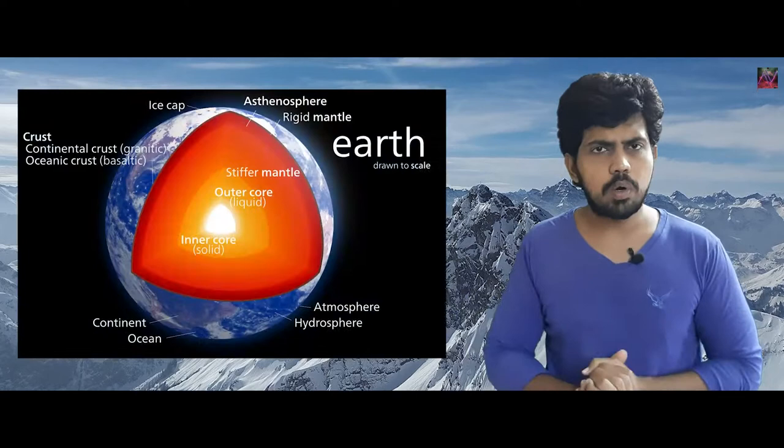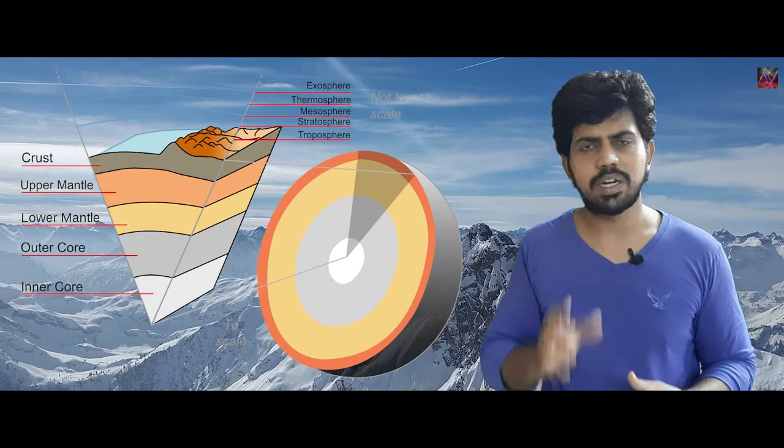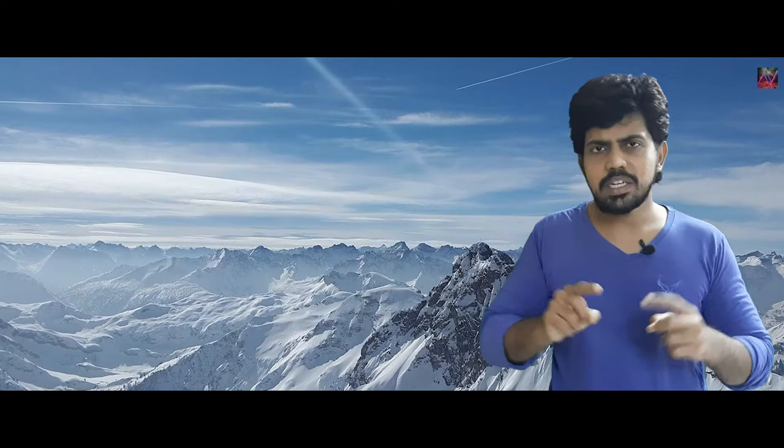Now let's see how tsunamis occur. We'll first know about the layers of the earth. Starting with the layers of the earth, it has a crust, mantle, outer core, and inner core. The crust is made up of a large number of tectonic plates.